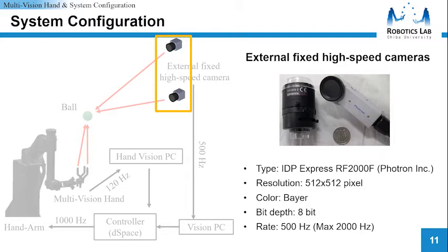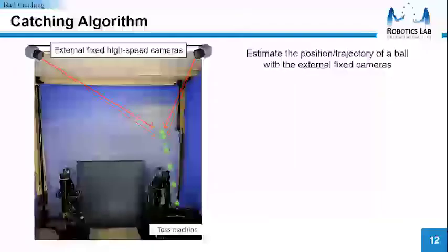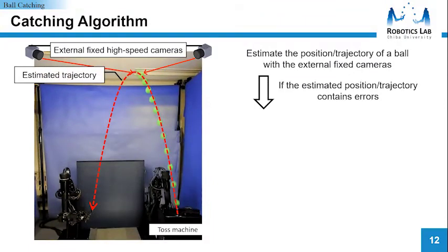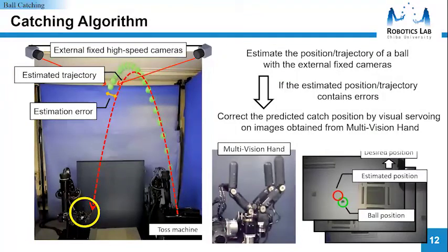Next is the proposed ball catching control. First, I'll explain the concept of the control briefly. At first, estimate the ball position and trajectory with external fixed high-speed cameras. If the estimated position and trajectory contain error, correct the predicted catch position by visual servoing on images obtained from the multi-vision hand.